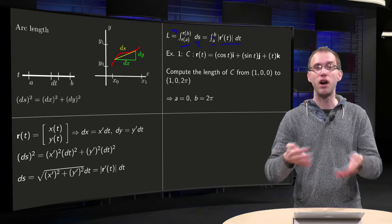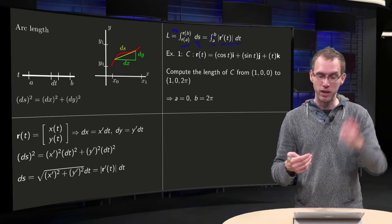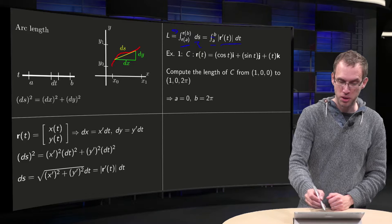Parametrize, compute r, compute r prime, compute its length, and then integrate from a to b. So let's do an example of some curve.